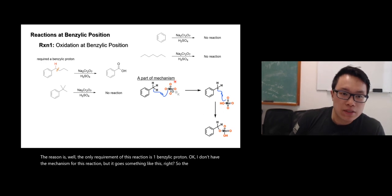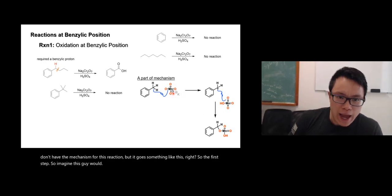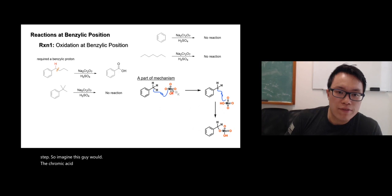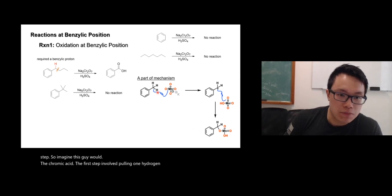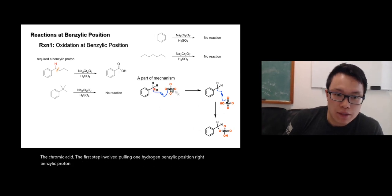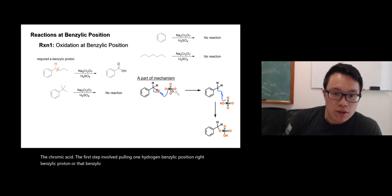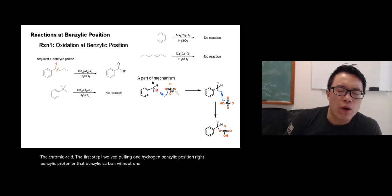Imagine if this guy were to be the chromic acid. The first step involves pulling one hydrogen - the benzylic proton off that benzylic carbon. Without one hydrogen, this reaction cannot occur.